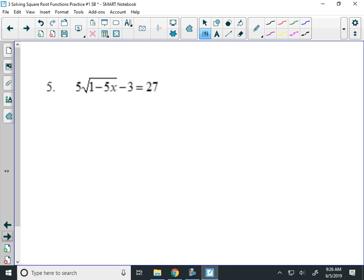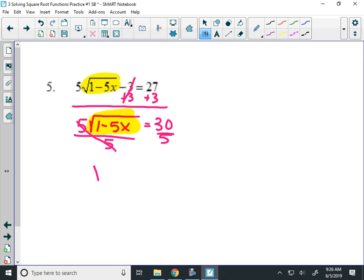Number 5. Same idea as the last one. I need to isolate the square root here. To do that, I'm going to add 3 to both sides to start. I get 5 square root of 1 minus 5x equals 30. I'm still not isolated, so I'm going to divide by 5. Alright, equals 6.